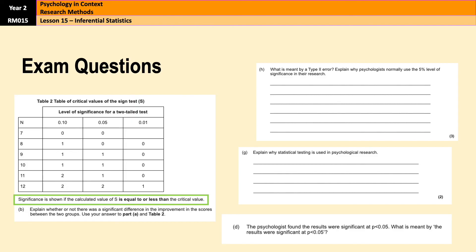Other typical exam questions include: what is meant by a type 2 error — a type 2 error is a false negative, so just explain what that means. Explain why statistical testing is used — it's used to establish whether we need to accept or reject the null hypothesis and find out whether results are significant. And what is meant by results being significant at P equals 0.05 — that means there is a less than 5% probability that results occurred by chance, or a 95% probability that results occurred because of the manipulation of the IV.